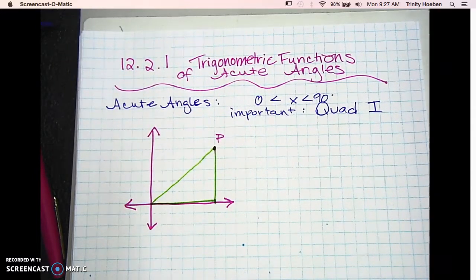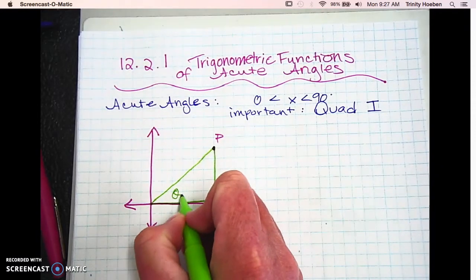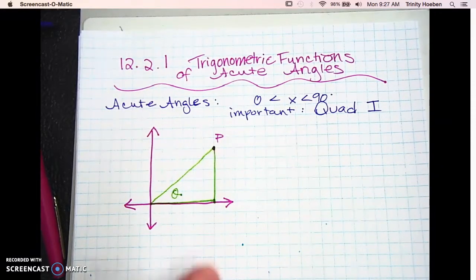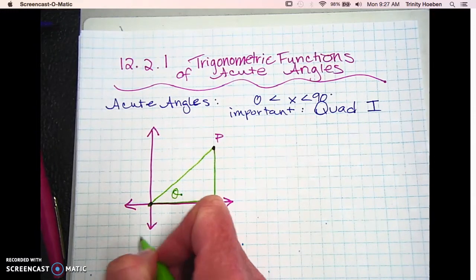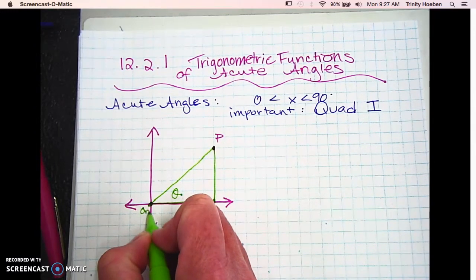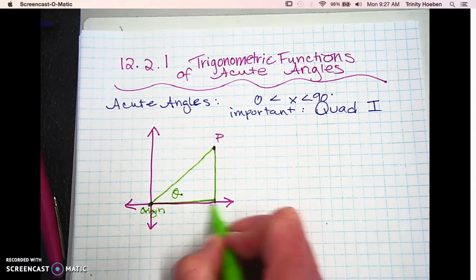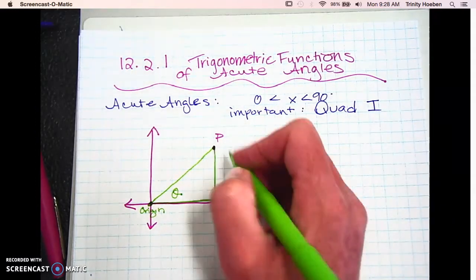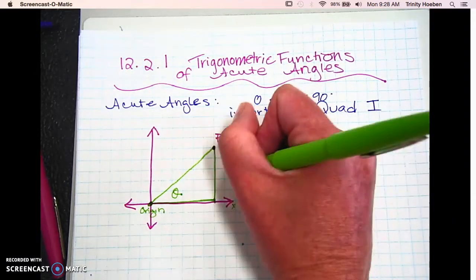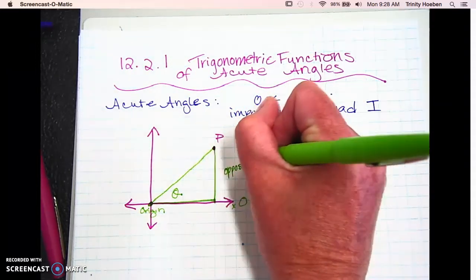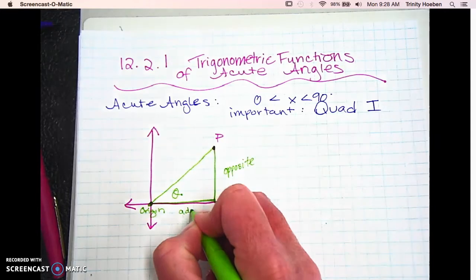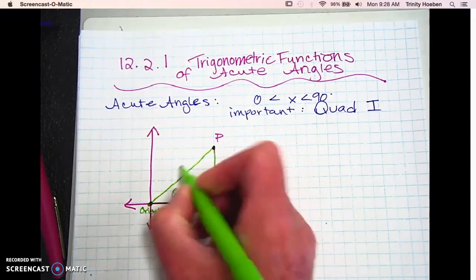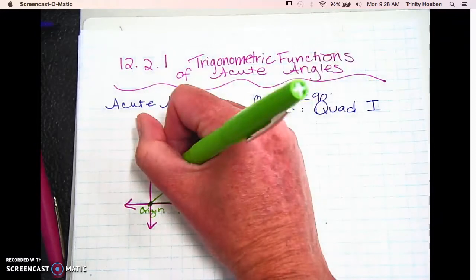Your angles can be given different names. We're going to call this one theta. Right here we'll call this the origin — you guys have heard that before. We're starting at 0 degrees right here. So if we come up here from theta, this is going to be our opposite side, this is going to be our adjacent side, which makes this side over here the hypotenuse.